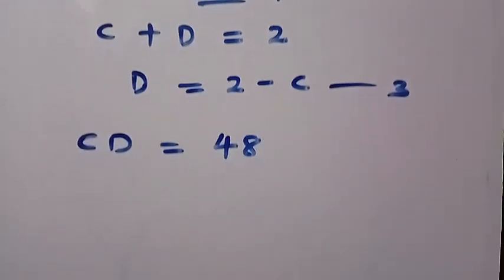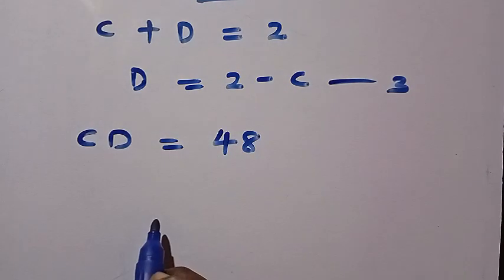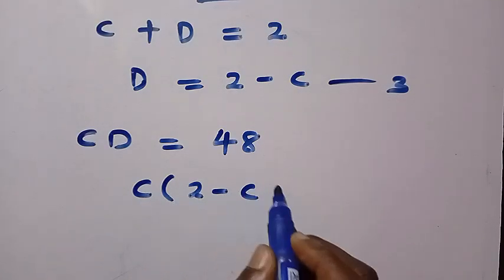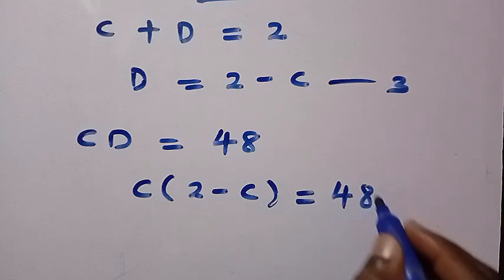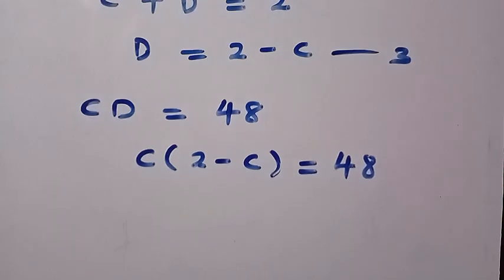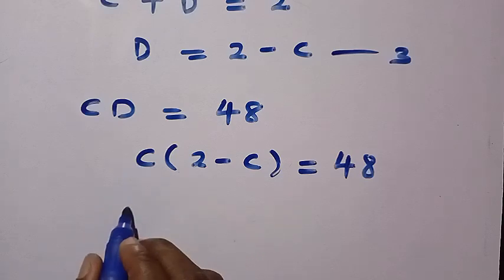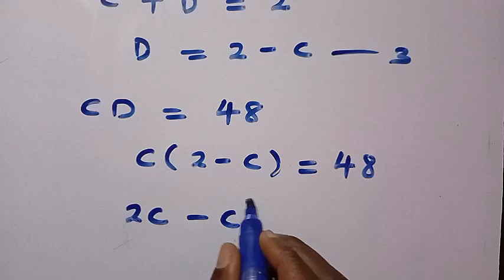Equation 1 says CD equals 48. By replacing D with 2 minus C, we have C multiplied by 2 minus C equals 48. By opening these parentheses with C, C times 2 that is 2C minus C times C that is C squared equals 48.